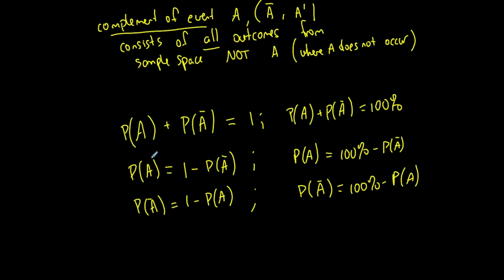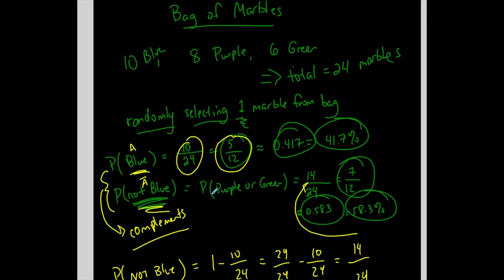So what you want to remember with compliments is you want to remember not only in notation form, not only if I write P of A and P of A compliment, what they mean, but I also want you to also remember what they mean in verbal form. If I write probability of blue, I want you to know the compliment of that would be not blue, everything but blue or purple or green. You have to think about it, not only verbally, but also in its proper notation.